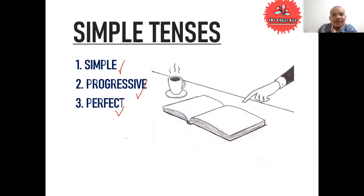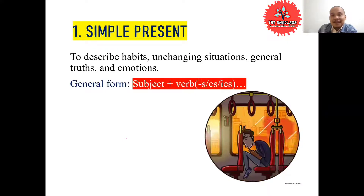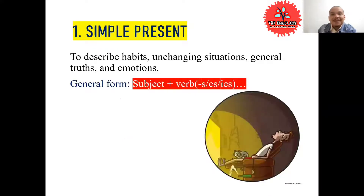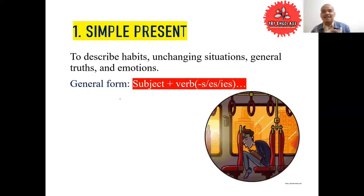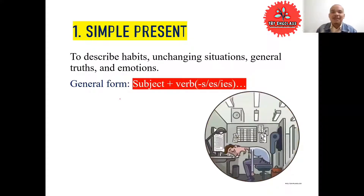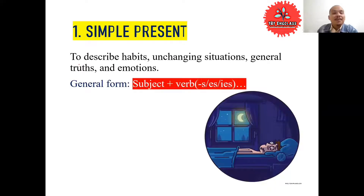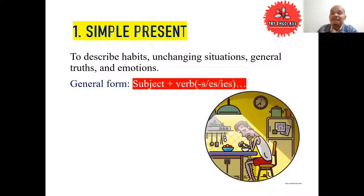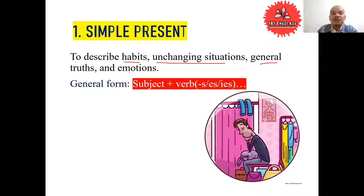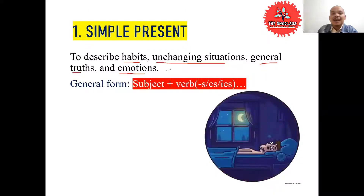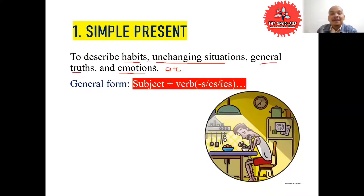Let's look at the first one: simple tense. Simple tense — we start with simple present. I think you know what simple present is. We use it to describe habits, changing situations, general truths, and emotions. There are many things to talk about with simple present.